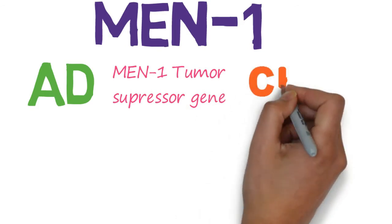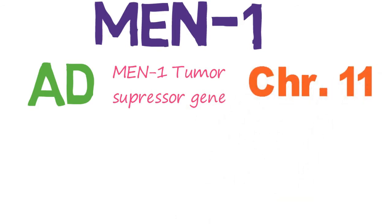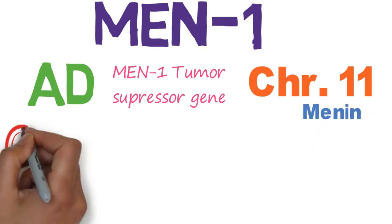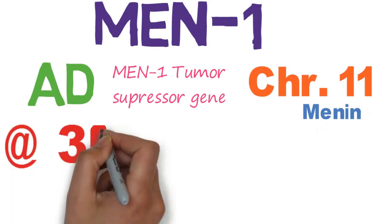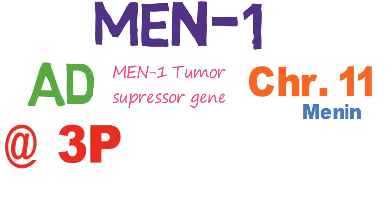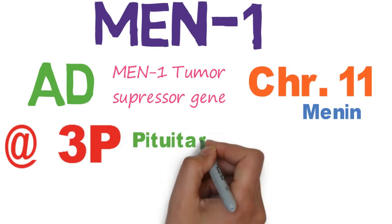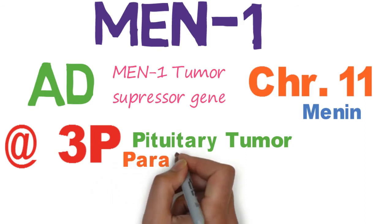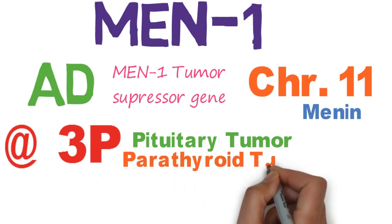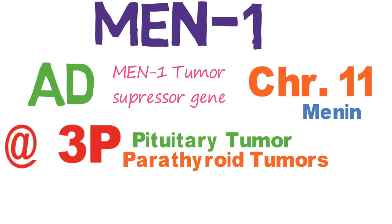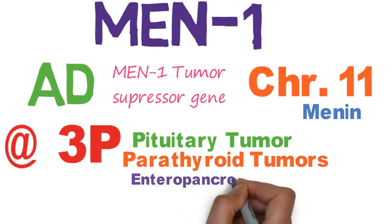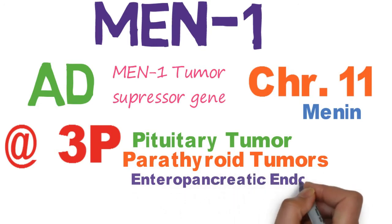The MEN1 gene is located on chromosome 11, and the protein coded by this gene is Menin. The mnemonic for MEN1 is 3P: the first P is for pituitary tumor, the second P is for parathyroid tumor, and the third P is for pancreatic or intrapancreatic endocrine cell tumors.